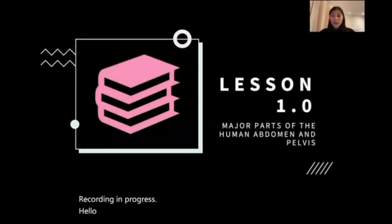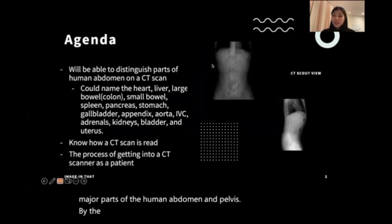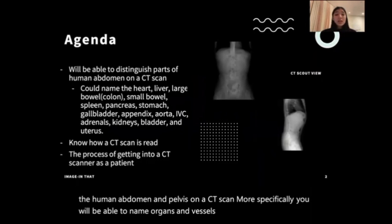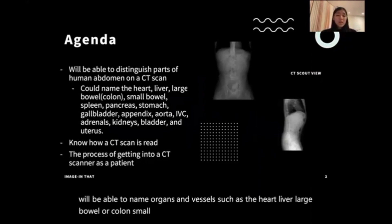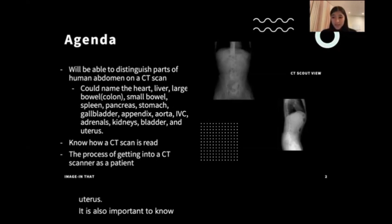Hello and welcome to lesson 1.0, where we will be going over the major parts of the human abdomen and pelvis. By the end of this lesson, you will be able to distinguish all parts of the human abdomen and pelvis on a CT scan. More specifically, you will be able to name organs and vessels such as the heart, liver, large bowel or colon, small bowel, spleen, pancreas, stomach, gallbladder, appendix, aorta, IVC, adrenals, kidneys, bladder, and uterus. It is also important to know how a CT scan is read, so we will be looking at an example.